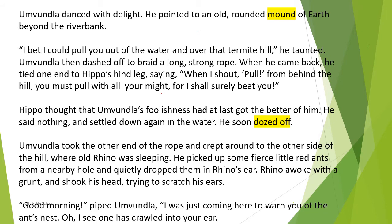Hippo thought that Umundla's foolishness had at last got the better of him. He said nothing and settled down again in the water. He soon dozed off. Hippo was not very keen on what Umundla was saying — he thought he was just kidding, just passing time, and might forget about it. He ignored Umundla and went back to rest. 'Dozed off' means you're sitting somewhere, get a little sleepy, and fall into a short nap — a small short sleep.